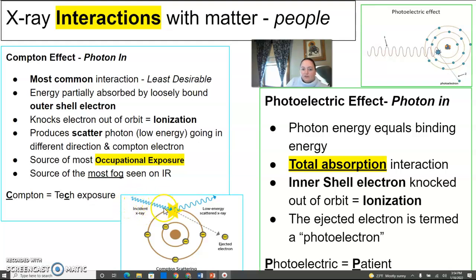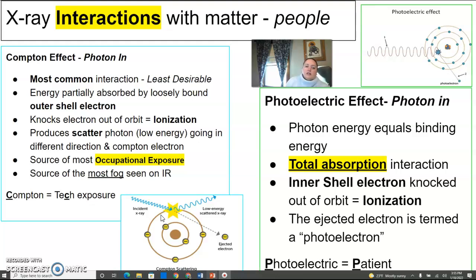The x-ray coming in is a photon traveling as a sine wave. Your Compton effect is the most common interaction, but it's the least desirable — we don't really want scatter because it doesn't help our image in any way. Its energy is partially absorbed by a loosely bound outer electron, which knocks the electron out of orbit — that's ionization. It then produces a scatter photon, which is low energy going in a different direction, and a Compton electron.